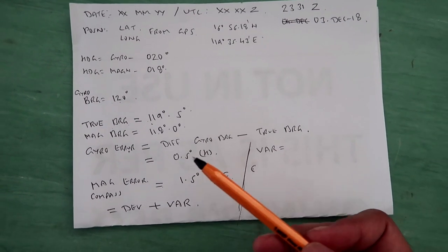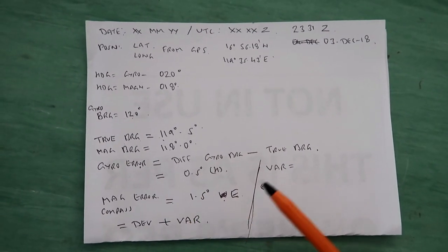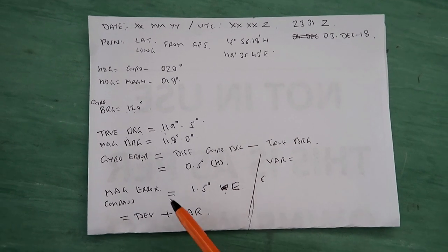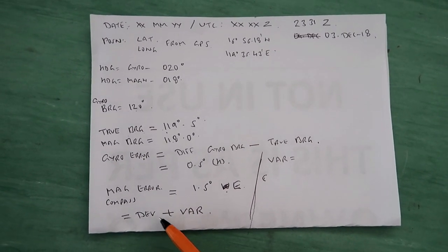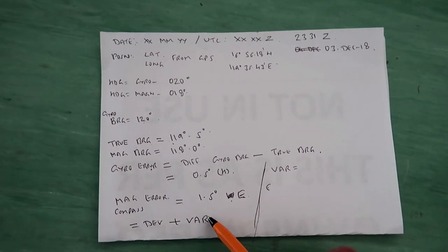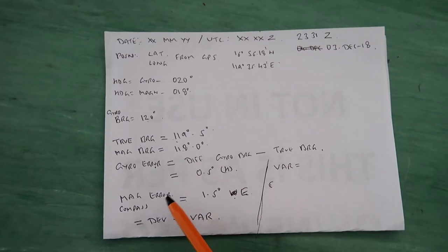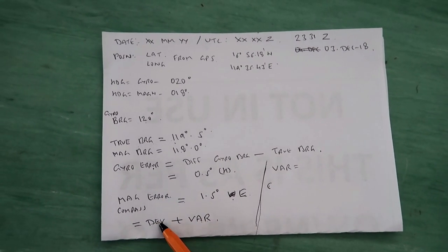Why are we doing all this? We are doing all this to find out deviation at present heading. Magnetic compass error is also deviation plus variation. Variation we'll have to note down from the chart, and once we know magnetic compass error and variation, we can easily get deviation.